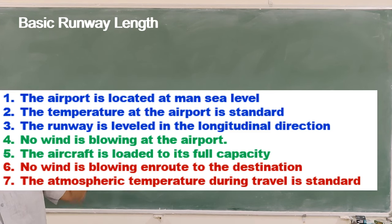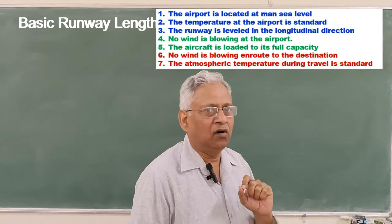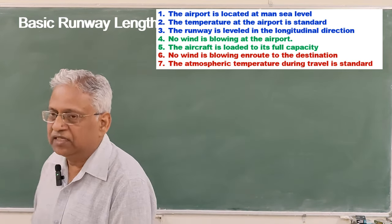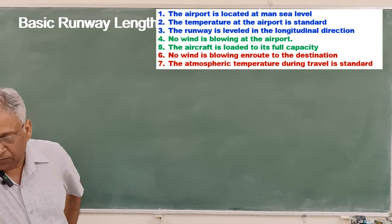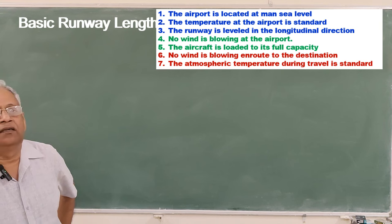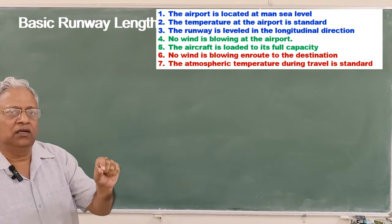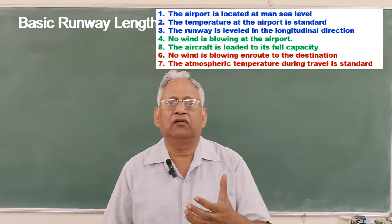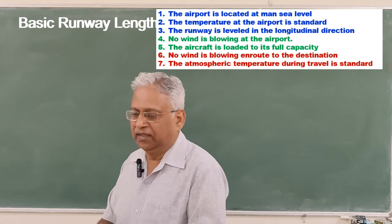And seventh is that atmosphere temperature during travel is standard. Now, the last two conditions — no wind blowing on the way to the destination and standard atmosphere temperature during travel — do not have any direct bearing on runway length. If these conditions are not met, they will have some influence on fuel consumption, and fuel consumption will have some effect on the weight of the aircraft at the time of landing, but not directly on basic runway length.